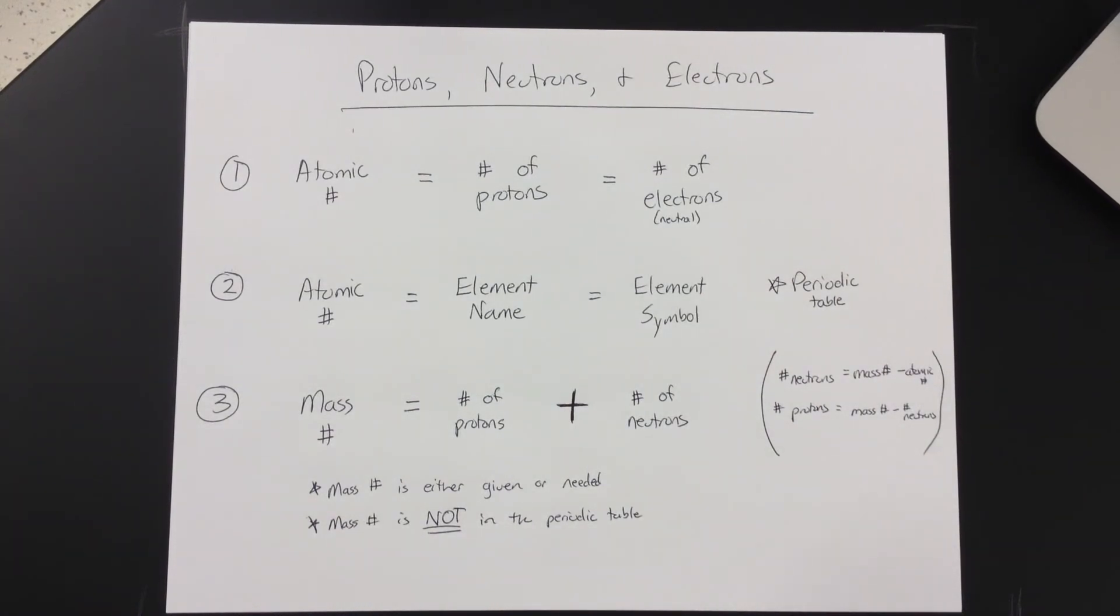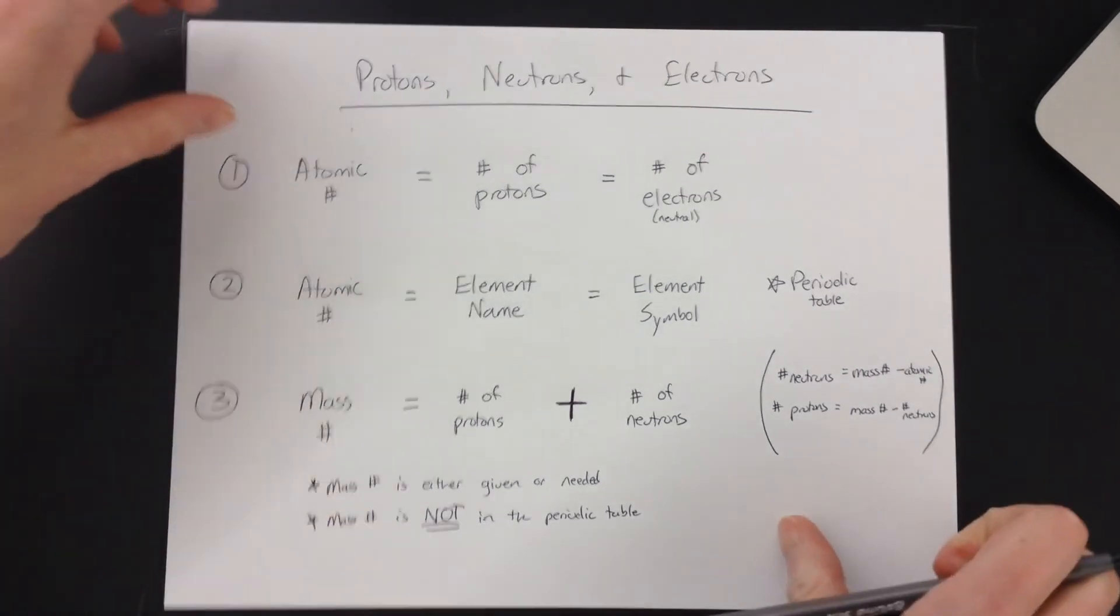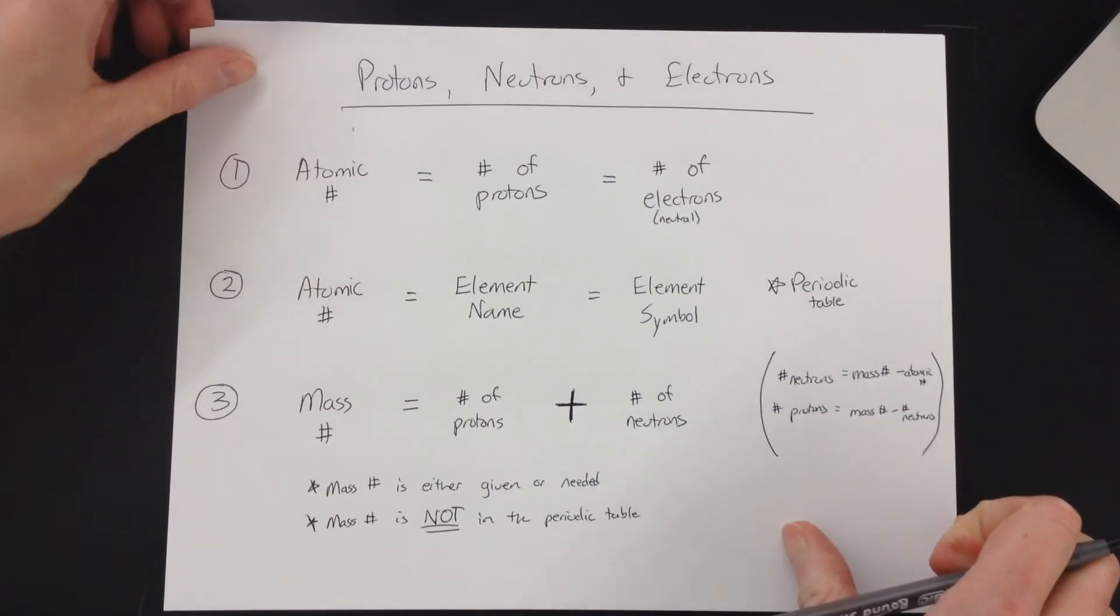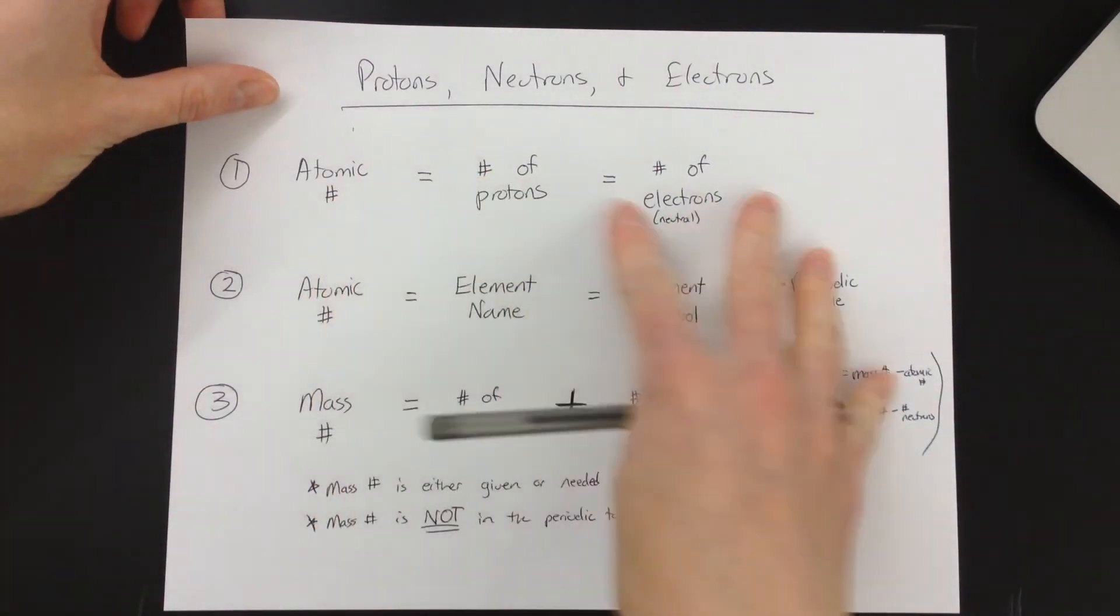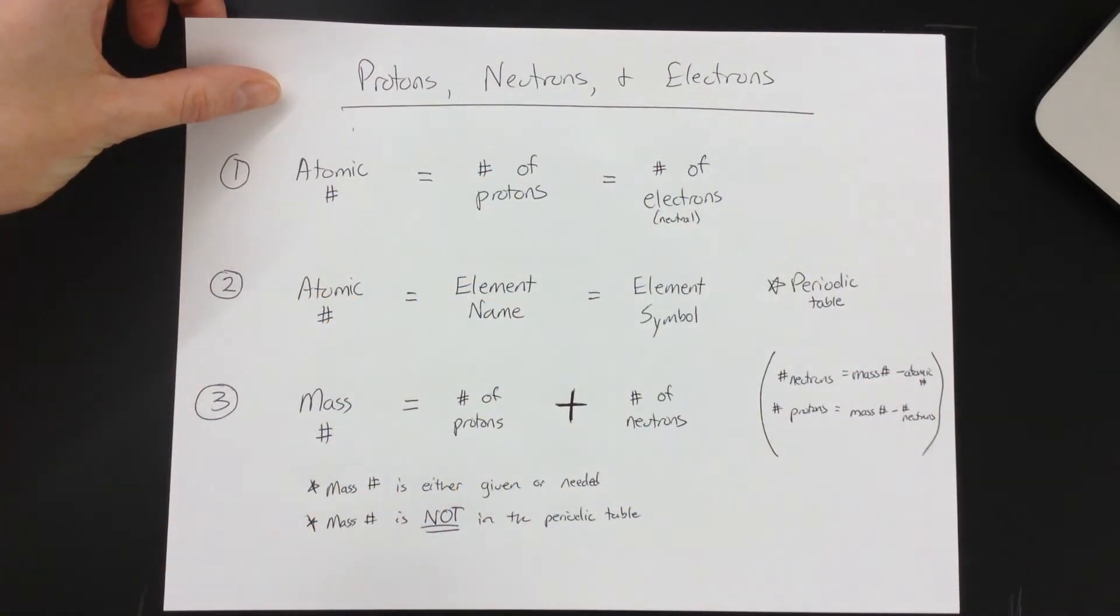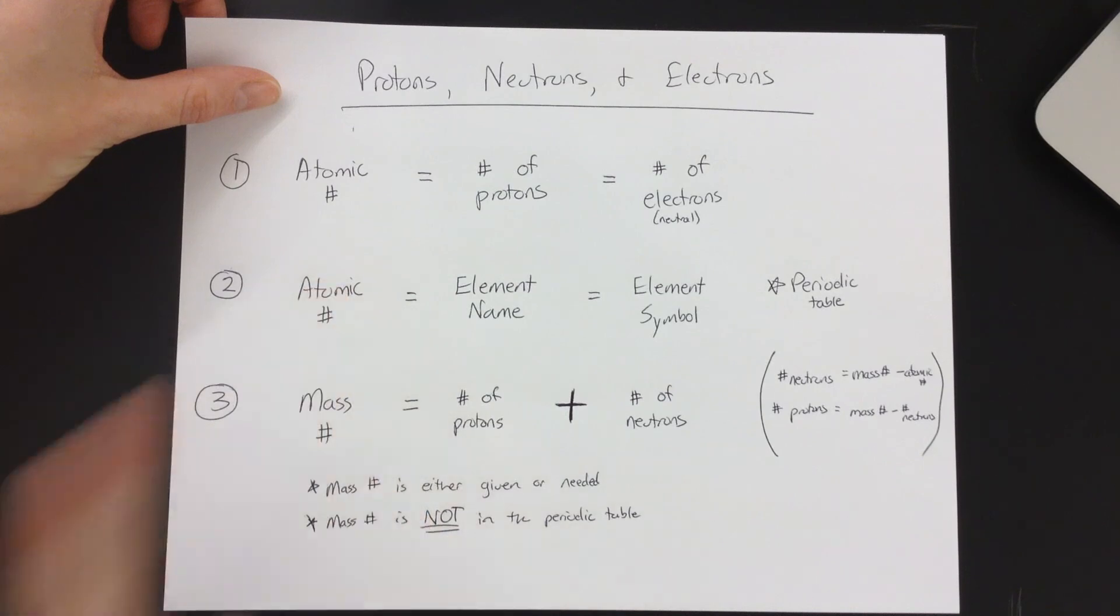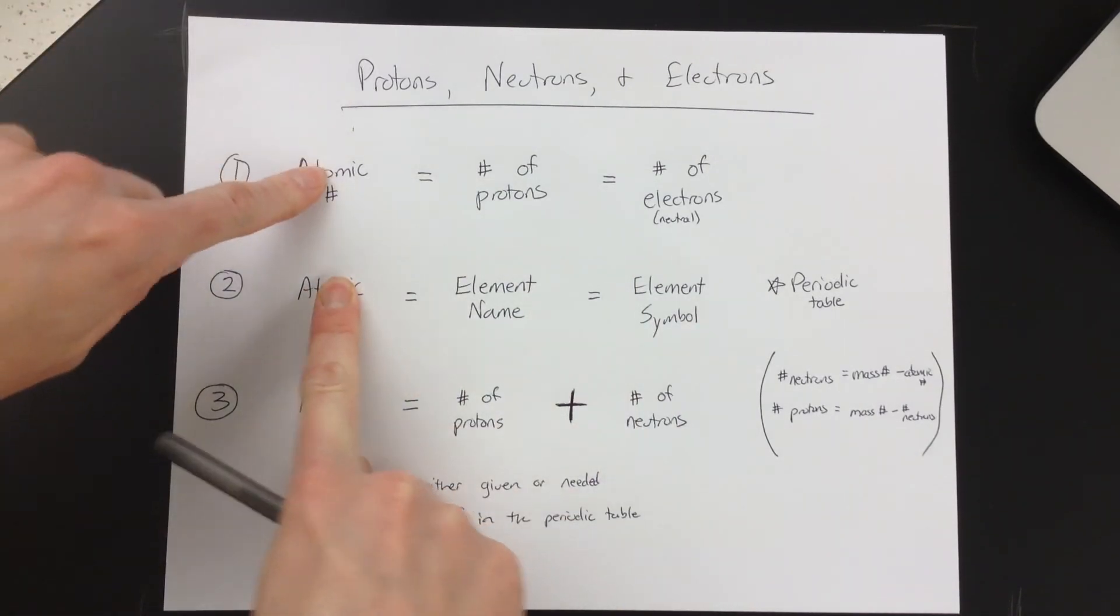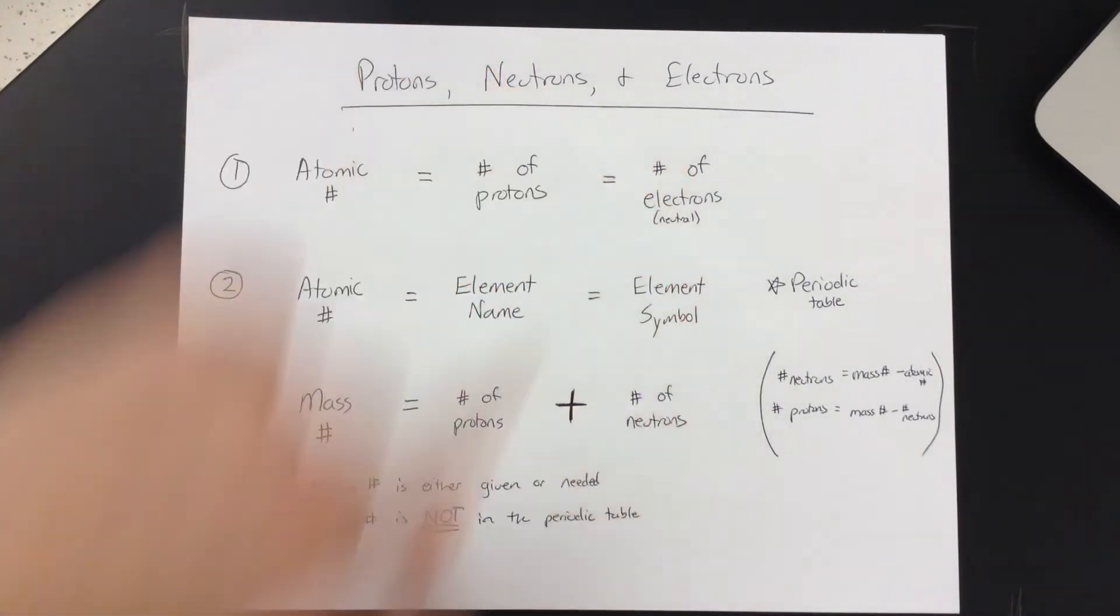Remember, that's the average atomic mass, which is not the same as the mass number, so don't use that one. So make yourself a copy of this. Take your handy worksheet and then just start going through. What do you know? What can you get? Find it on here. Oh, I have the atomic number. That means I can have the number of protons, electrons, the element name, and the element symbol.